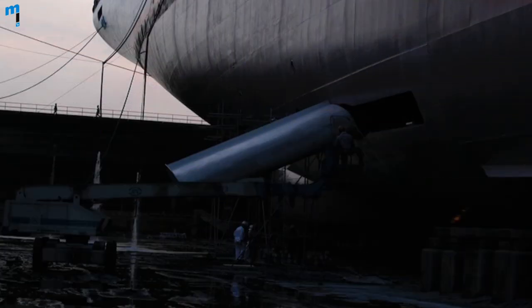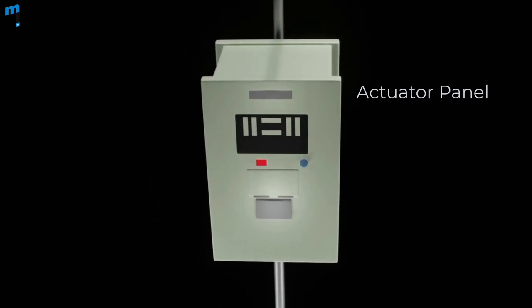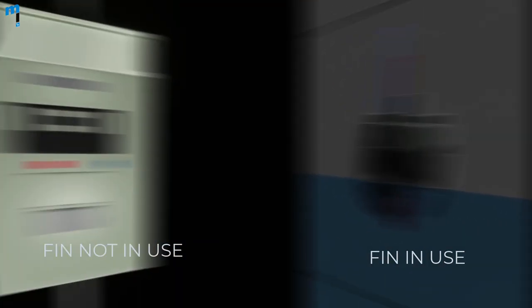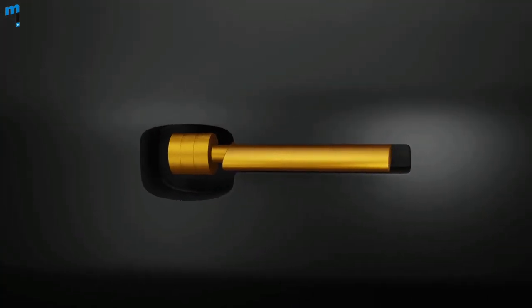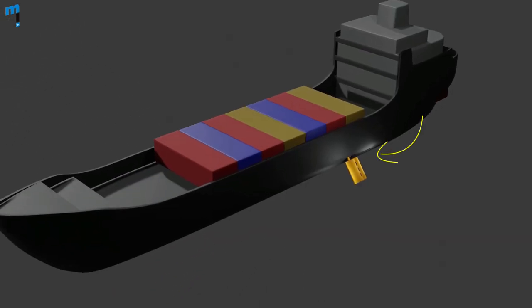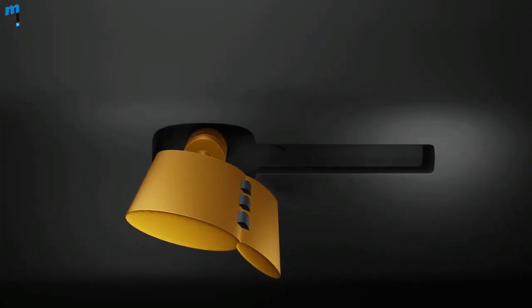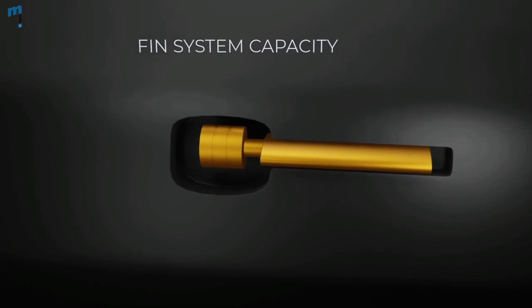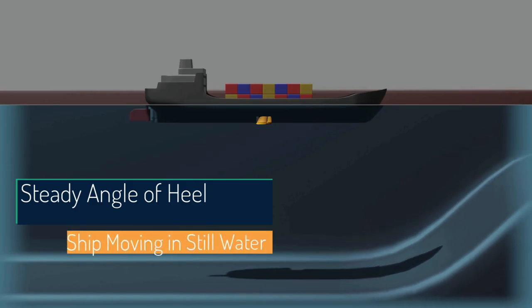With active fins, a sensitive gyro system senses the rolling motion of the ship and sends a signal to the actuating system, which in turn causes the fins to move in a direction such as to create forces opposing the roll. The actuating gear is usually electro-hydraulic. The fins, which may be capable of retraction into the hull, are placed about the turn of the bilge in order to secure maximum leverage for the forces acting upon them. A flap on the trailing edge may be used to enhance the lift force generated. The capacity of a fin system is usually expressed in terms of the steady angle of heel it can cause with the ship moving ahead in still water at a given speed.